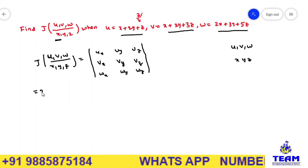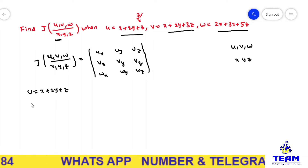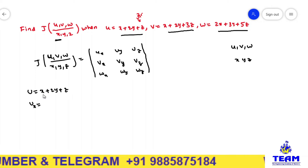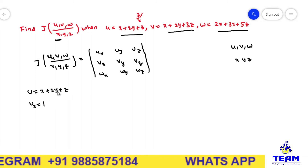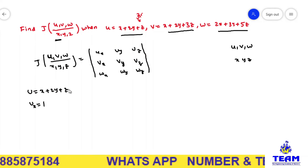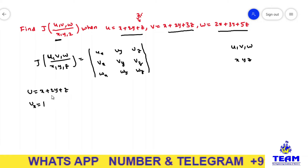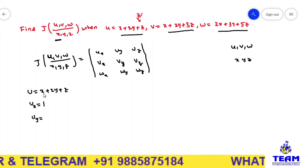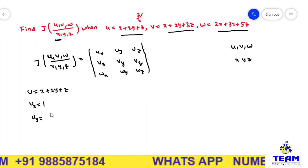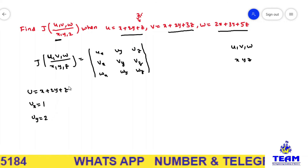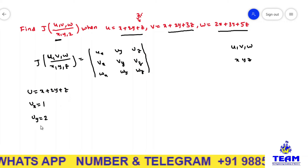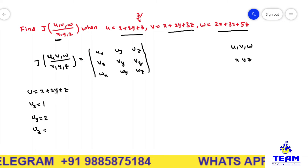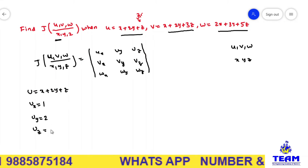Given u is equal to x plus 2y plus z. Differentiating u partially with respect to x: only the first term contains x, so ∂u/∂x equals 1. Differentiating u partially with respect to y: the term 2y gives ∂u/∂y equals 2. Differentiating u partially with respect to z: the term z gives ∂u/∂z equals 1.